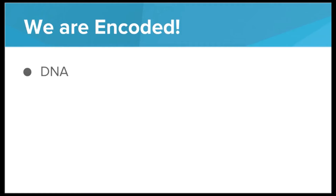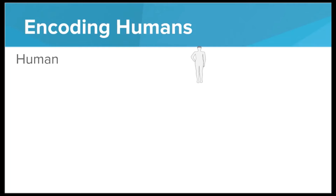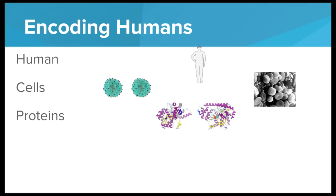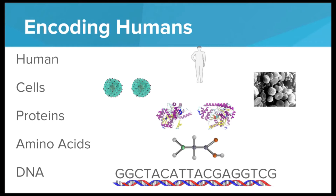It turns out humans are encoded as well. Every human has DNA that spells out the exact instructions for making every type of protein in your body. At the very top level we have a human, but a human can be broken down into several cells, and each of these cells have their own proteins. Each protein is made up of a series of amino acids, and the exact sequence of amino acids that go into making a specific protein is encoded using DNA. We can think of DNA as just a long string of characters, and the only characters we can choose from are G, C, T, and A.